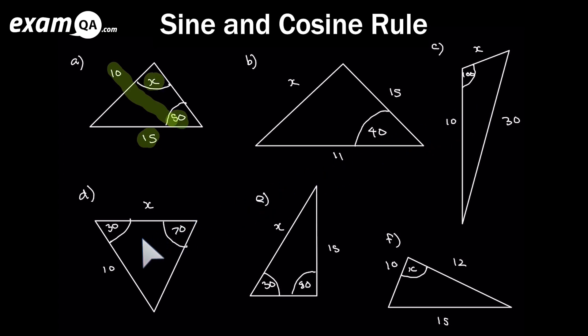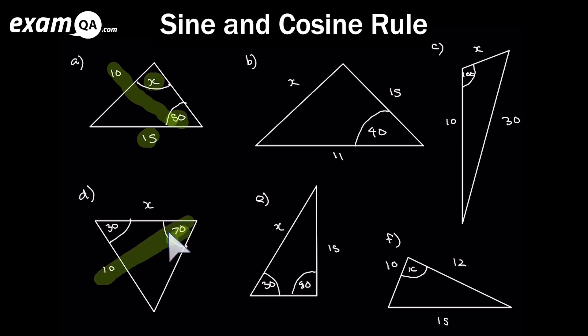For triangle D: two angles are present, so we're thinking sine rule. We do have a full section. We're trying to work out side x, but we don't have the corresponding angle to it known, so we don't immediately have a half section. However, the missing angle can easily be worked out using the fact that angles in a triangle add up to 180 degrees. Once we have that angle, we have our half section and can proceed.